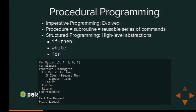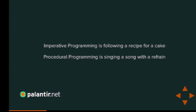A very simple procedural program can look like this: we define our list, we have a 'biggest' variable, then we define this set of commands, call it, and print out the value at the end. That's a procedural program. Notice we are manipulating state — we are changing values as we go. Essentially, it's like singing a song with a refrain, where you can repeat the chorus over and over again. It's reusable, you can just reference it, but you're still executing one line after another, after another.